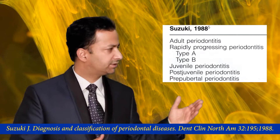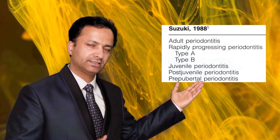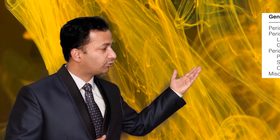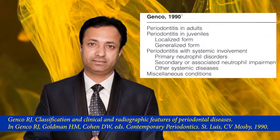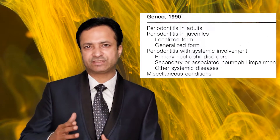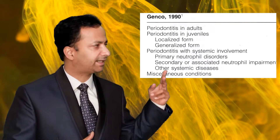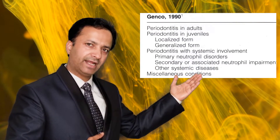In the same year 1988, Suzuki proposed a classification system in which rapidly progressive periodontitis was classified into type A and type B depending on clinical presentation. In 1990, Dr. Janko proposed a classification system with special emphasis on neutrophilic function. Periodontitis with systemic involvement was subcategorized into three categories: primary neutrophilic dysfunction, secondary neutrophilic impairment, and systemic diseases.